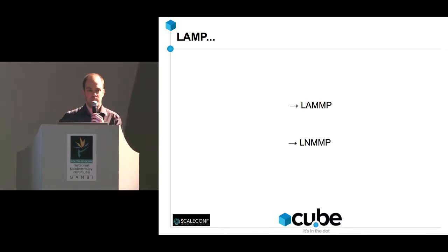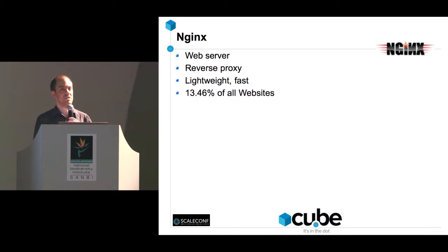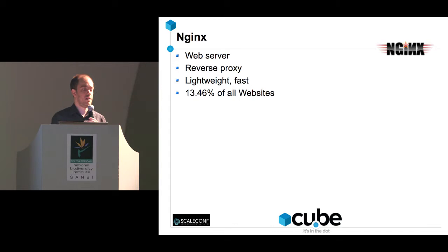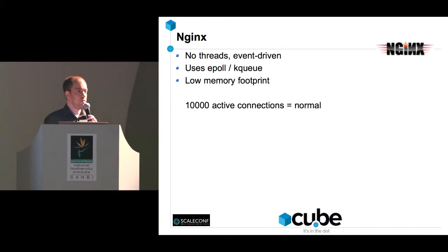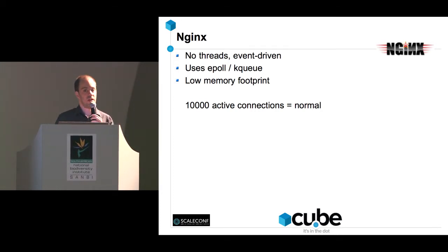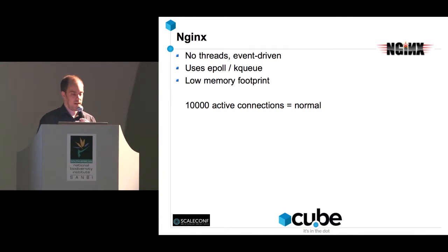We started from LAMP, added an M for memcache or an R for Redis. Now let's see if we can get rid of the A. Who here works with nginx? Who's ever heard of nginx? Nginx is a web server, also a reverse proxy, also an IMAP and SMTP server. It's very lightweight and very fast, currently running on 13.5% of all websites — the second largest web server after Apache. It doesn't use threads like Apache does; it's event-driven, which makes it very efficient. You can have thousands of simultaneous connections with very low overhead.